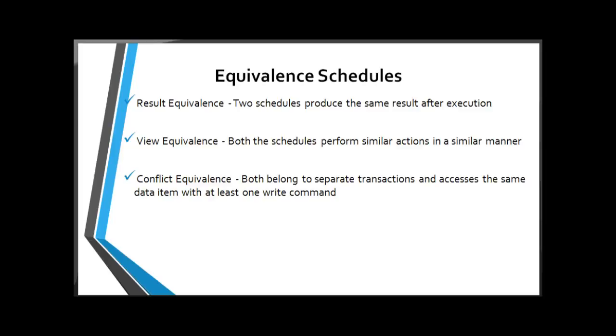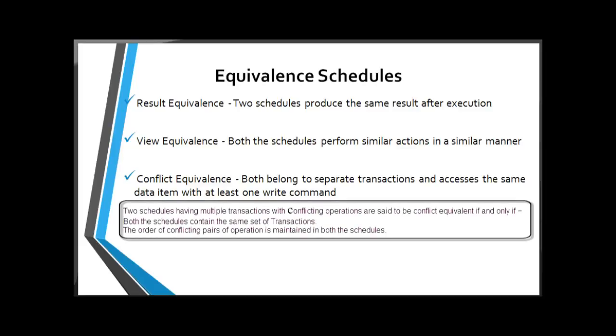Then Conflict Equivalence. Two schedules would be conflicting if they have the following properties: both belong to the same transaction, both access the same data item, and at least one of them is a write operation. If the two schedules have multiple transactions with conflicting operations, they are said to be conflict equivalent if and only if both schedules contain the same set of transactions, and the order of the conflicting pair of operations is maintained in both schedules.